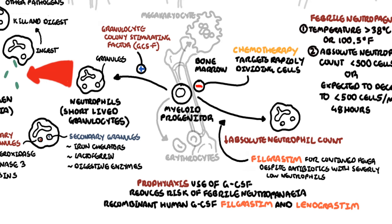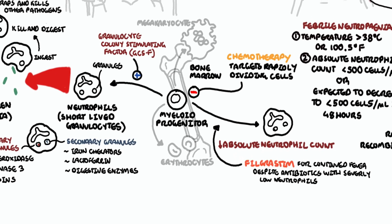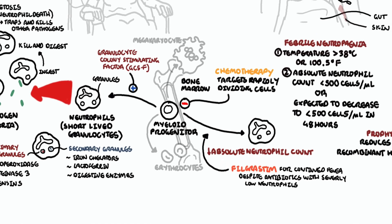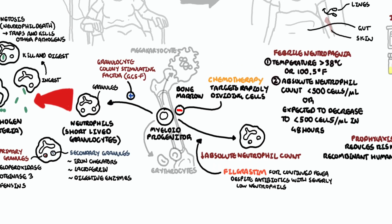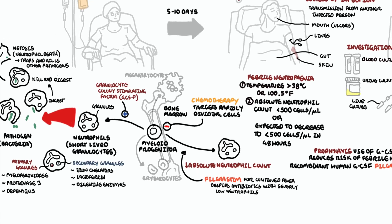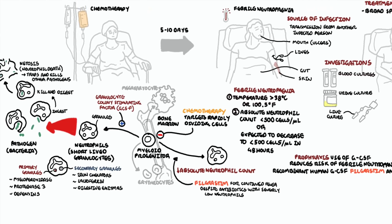Thank you for watching this video on febrile neutropenia, which is an oncological emergency. People should have broad spectrum antibiotics commenced and also everything cultured — bloods, urine, and any lines that a patient may have.